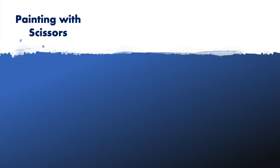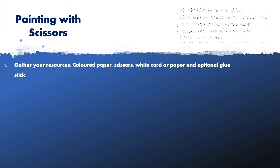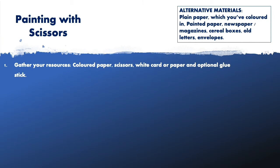Let's break down our task — painting with scissors. Step one: gather up all your resources. These include colored paper, scissors, white card or paper, and optionally a glue stick. If you haven't got colored paper at home, you can color plain paper with pencil, felt tip, highlighter, or paint. If that's not possible, you could use newspaper, magazines, cereal boxes, old letters, or envelopes. Be creative and get your hands on anything you can find.